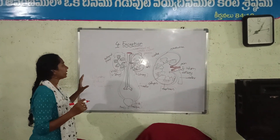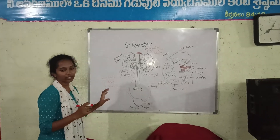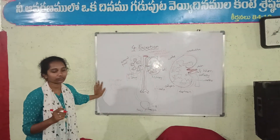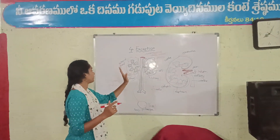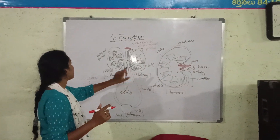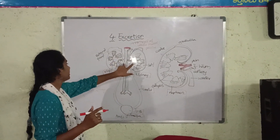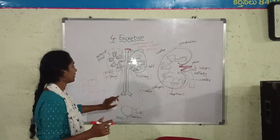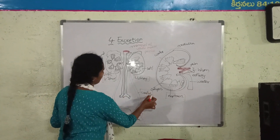The name of the excretion organ is called the kidney. There is one kidney and two kidneys. This part is essentially called Eurasian blood.